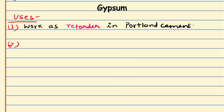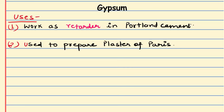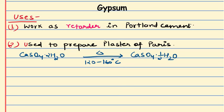Gypsum is mainly used to prepare plaster of paris. When gypsum is heated to 120 to 160 degrees centigrade, we get plaster of paris.